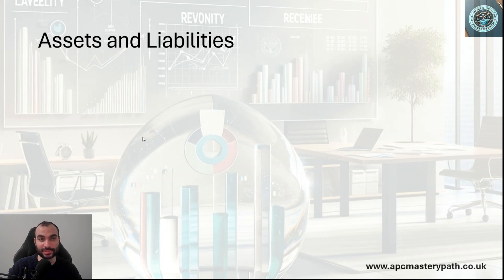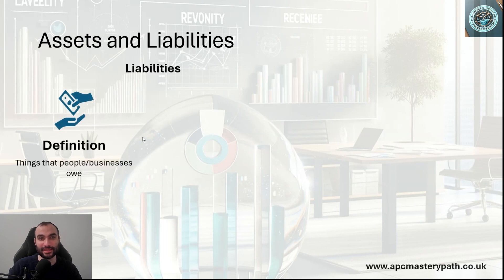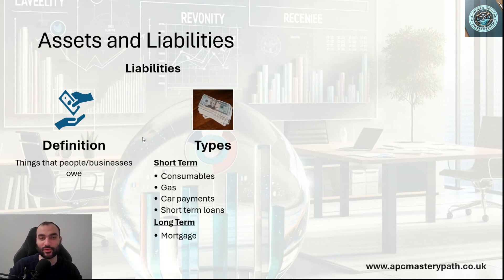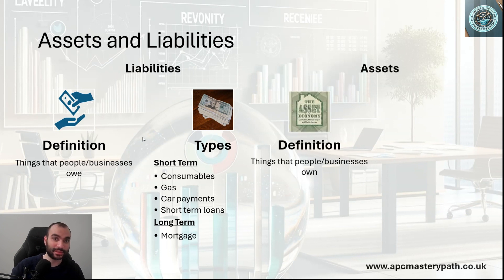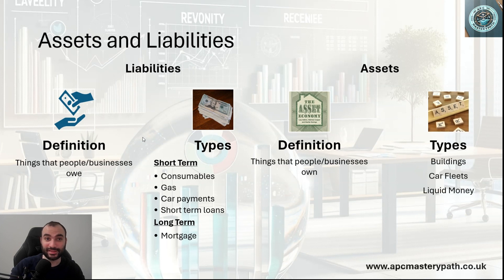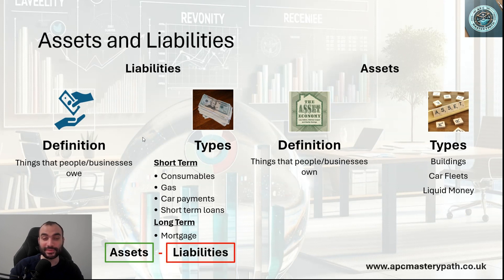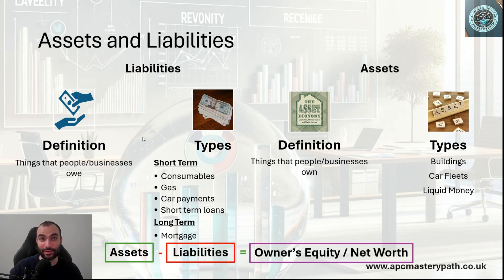Starting with assets and liabilities. Liabilities are basically the debts that businesses or people are not able to pay on time. They could take the form of long-term liabilities such as mortgages, or short-term forms such as consumables, rents, co-payments and the likes. Assets are the things that people and businesses own — they could be car fleets, equipment, buildings, or technological bits and pieces. When you deduct liabilities from assets, that gives you the shareholder's equity, or how much the business is worth.